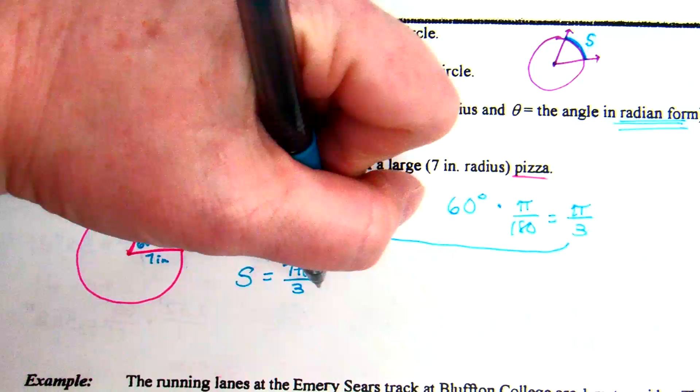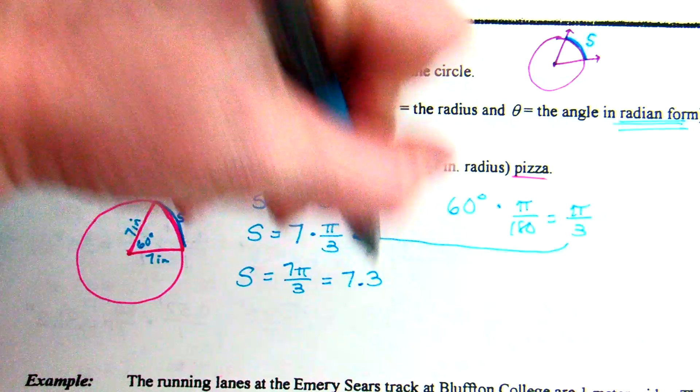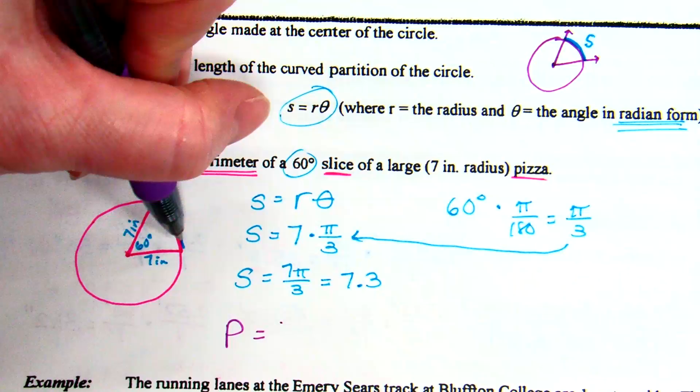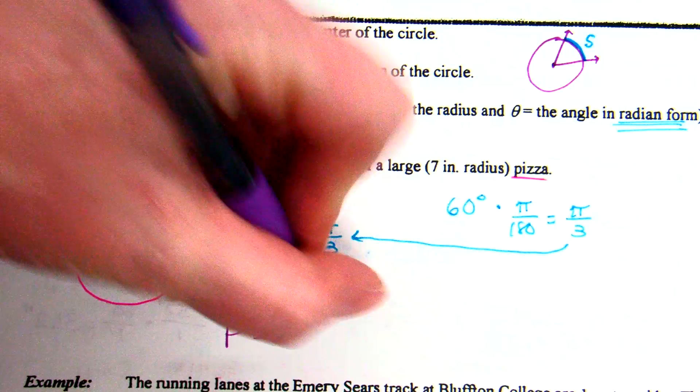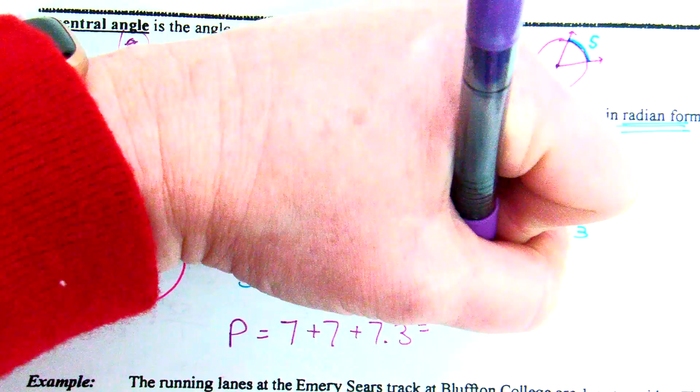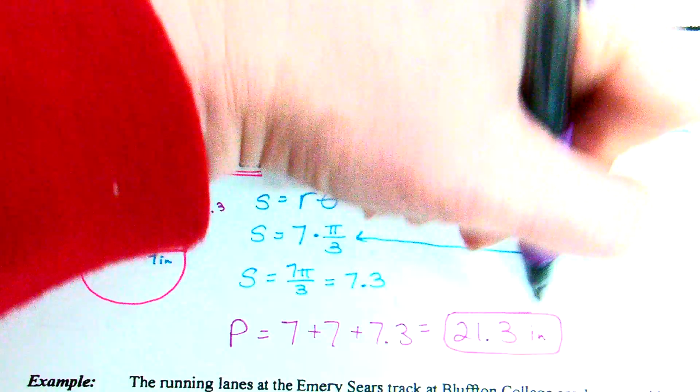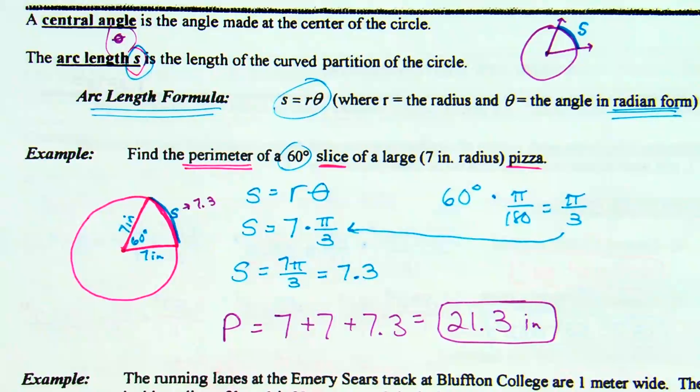So what is 7 times pi over 3? 7 pi over 3. Now I'll be honest, I'm going to go the decimal route on this one because they're asking for the perimeter of the pizza. What is 7 pi over 3 as a decimal? 7.3. Now, am I done? Is that what they wanted? No. They want the perimeter of that slice of pizza. So how do I find the perimeter of that slice of pizza? We need the 7.3 along with the 7 and 7. So 7 plus 7 plus 7.3, which is 21.3 inches.